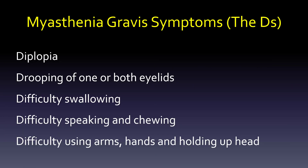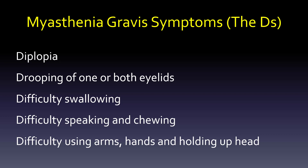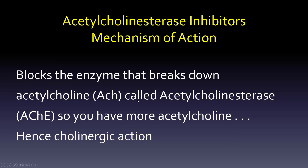Let's move on to the symptoms of myasthenia gravis — the Ds, because everything seems to start with D: diplopia (double vision), drooping of one or both eyelids, difficulty swallowing, difficulty speaking, chewing, and difficulty using your arms and hands and holding up your head because the muscles are weak. If you need acetylcholine, we use an acetylcholinesterase inhibitor. We block the enzyme that breaks down acetylcholine — called acetylcholinesterase (AChE) — so you have more acetylcholine, hence cholinergic action.